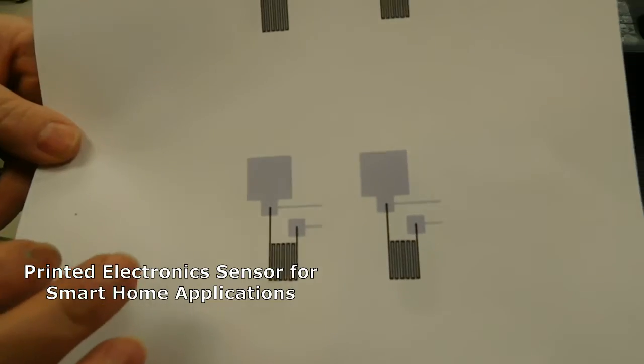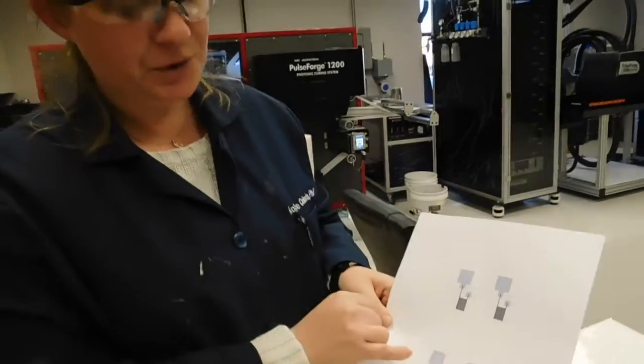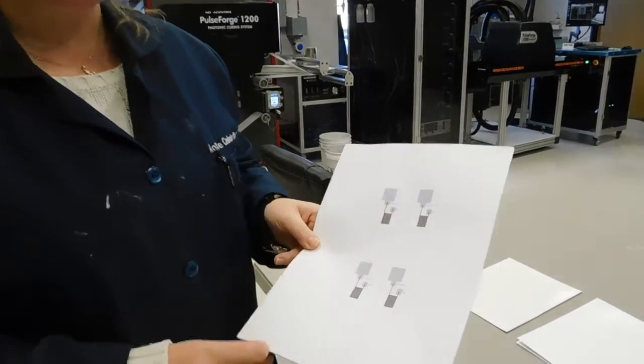This is the image that I generated on PowerPoint and converted it to a PDF. It has two components: the silver touch component and silver contacts, and a carbon resistor.